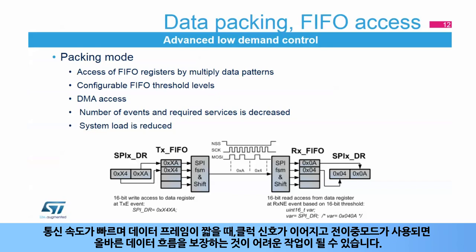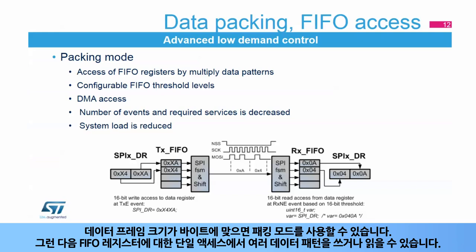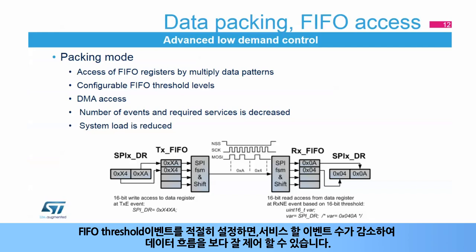When communication speeds are fast and data frames short, it can be a demanding task to ensure correct data flows when the clock signal becomes continuous and the full duplex mode is used. Slave nodes have to properly service all the transactions sent by the master to prevent any data overrun or underrun conditions. When the data frame size fits into a byte, packing mode can be used. Then multiple data patterns can be written or read in a single access to the FIFO registers. Together with the proper setting of the FIFO threshold event, the number of events to service will decrease to better control the data flow.